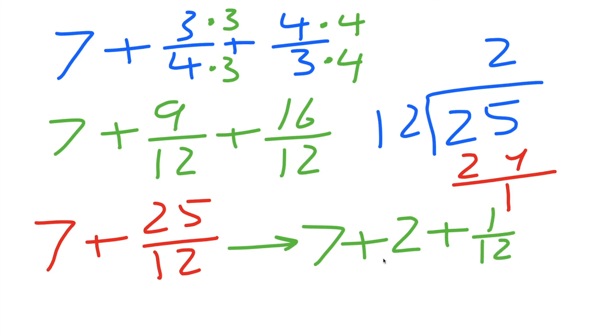So now we just got to combine all the whole numbers. 7 plus 2 is 9, and our fraction is 1/12. So we have 9 and 1/12 is our final answer. And so that's all we need to do when adding mixed numbers with unlike denominators.